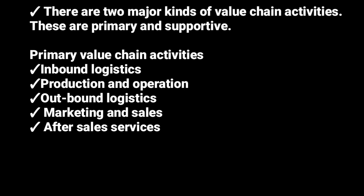Lastly, we have after-sale services. These are services that are given to customers after selling to them. Examples include a discount, free transportation, free installation, guarantees, and warranties. So those are the five primary value chain activities: inbound logistics, production and operations, outbound logistics, marketing and sales, and after-sale services.